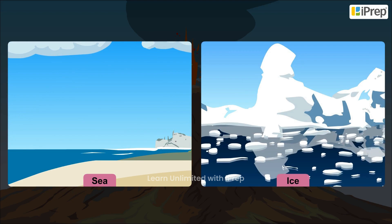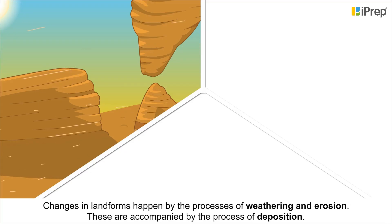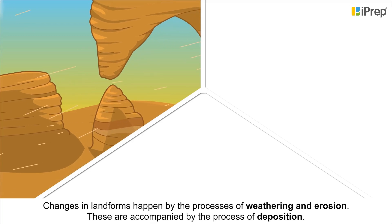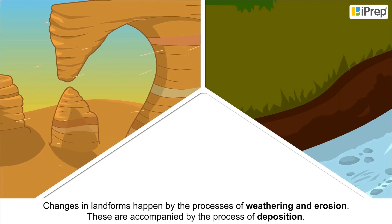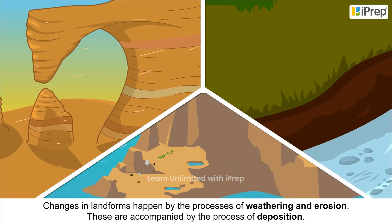Also, by flowing wind, changes in landforms happen by the processes of weathering and erosion. These are accompanied by the process of deposition.